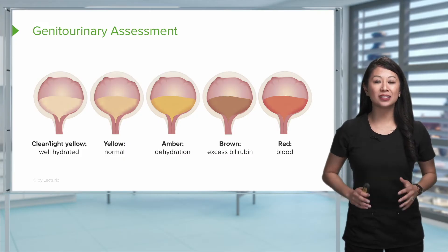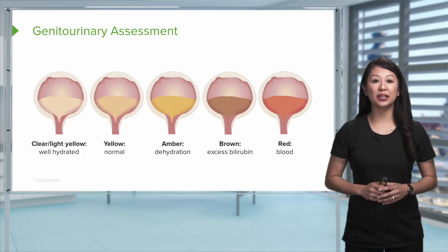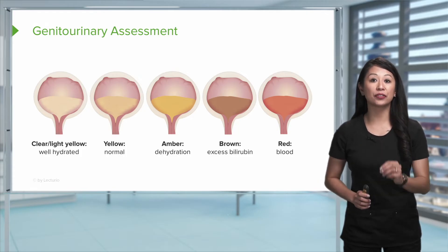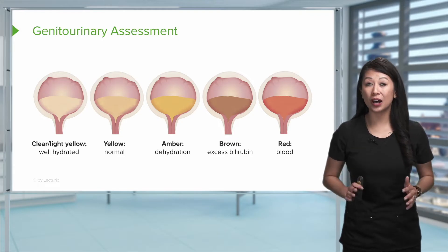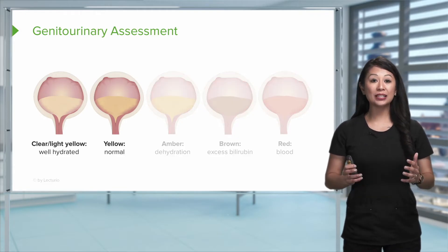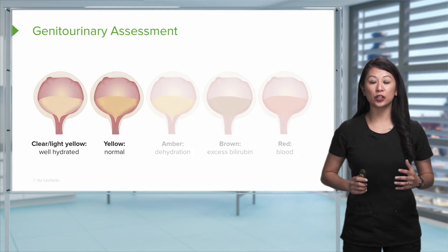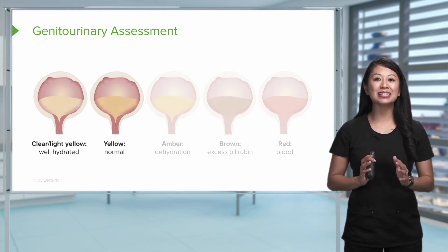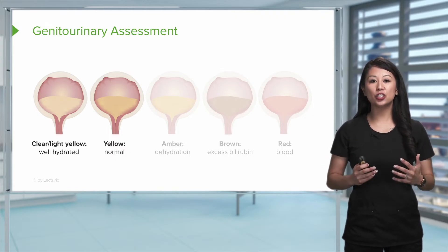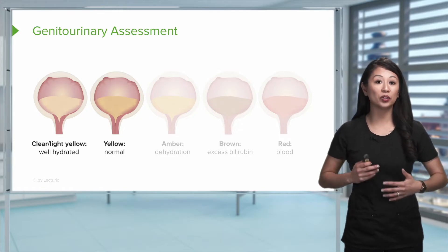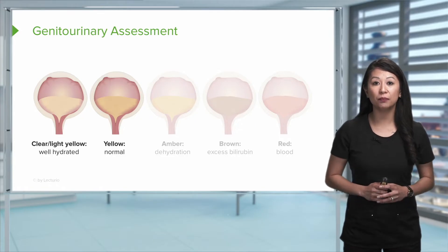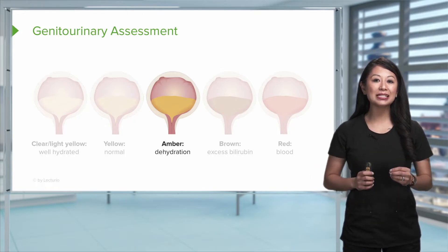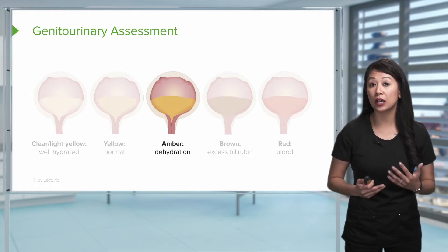It's really important to document in the GU assessment the patient's urine color. This is important to note throughout the shift, as it tells us a lot about your patient. Starting with clear, light yellow to yellow — this is actually normal and ideal. This is usually indicating that the kidneys are functioning properly and the patient is well hydrated. Sometimes a patient can be dehydrated and you may see the urine as amber or dark golden yellow.